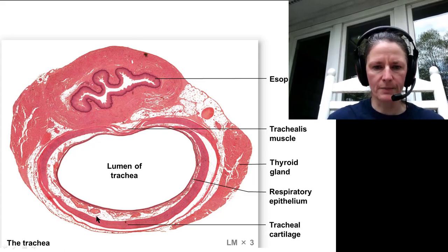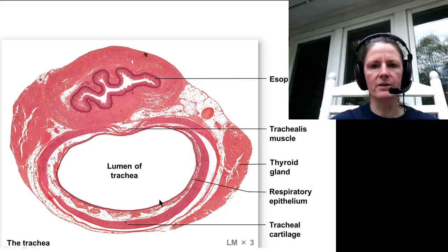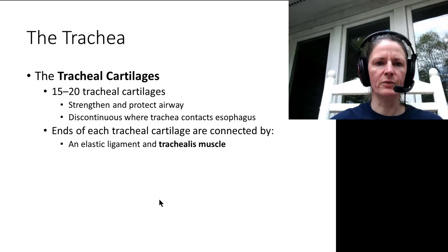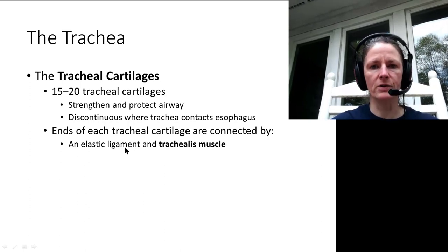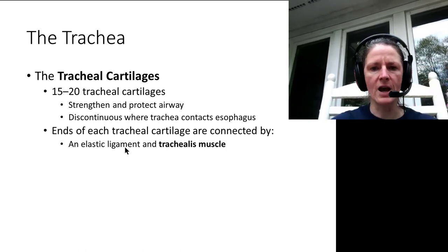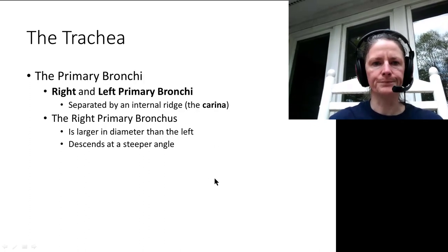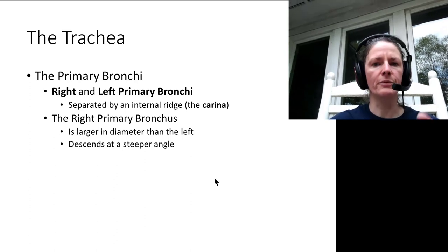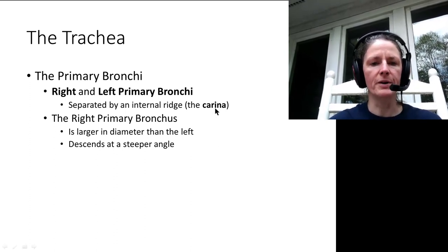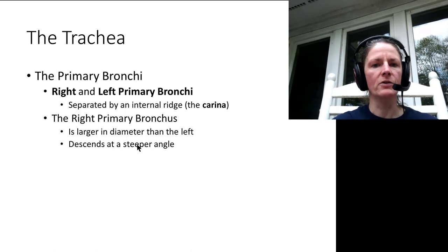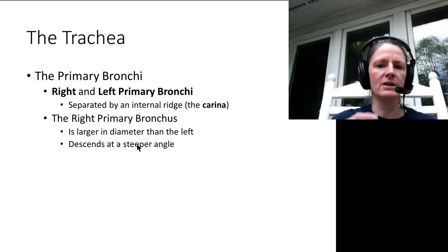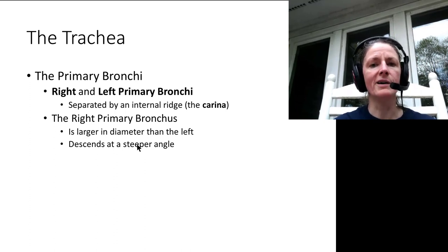The pseudostratified ciliated columnar epithelium brings mucus up the mucus elevator to be swallowed or coughed out. There are about 15 to 20 tracheal cartilages, with an elastic ligament interconnecting the two edges of the C and the trachealis muscle. The left and right primary bronchi are separated by the carina. The right primary bronchus is larger in diameter and descends at a steeper angle, which is why people tend to get infections more often in the right bronchus. When intubating, you must be careful not to go so deep as to enter the right bronchus.